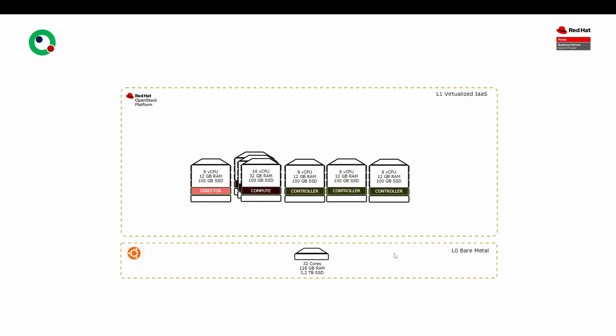After KVM is deployed, I have deployed the different virtual machines which will become my different OpenStack nodes. So I will have a director, the different compute nodes, controllers, and we also have the utility nodes, which will be used for DNS, NTP, and also NFS backend storage.